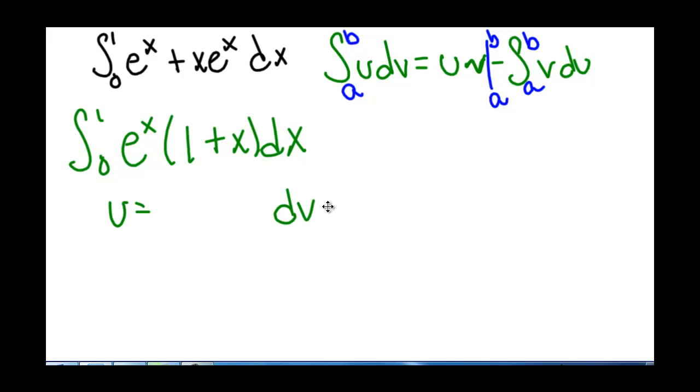Experience has shown that typically our dv is going to be our e to the x dx, and our u is going to be the term with the x in it. So in this case 1 plus x. Finding the derivative of u, we get dx. And finding the integral of dv, we get v equals e to the x. And this time we won't have a constant of integration because we have a definite integral.